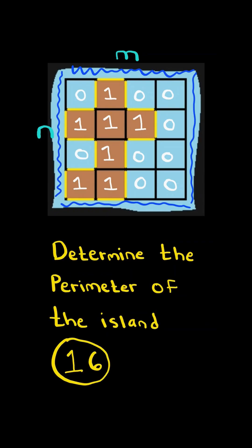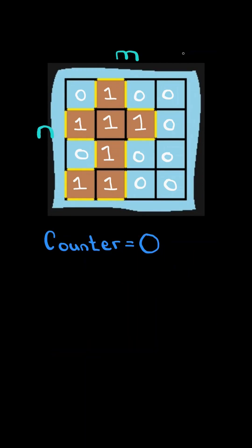In this case, the perimeter is the 16 yellow stripes in the image. We will solve this in O(n × m) time. First, we'll initialize a counter to zero and iterate through each square of the grid.